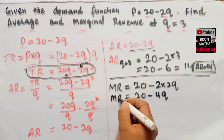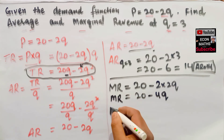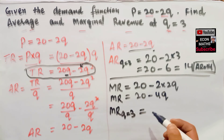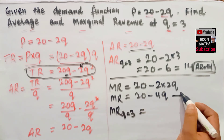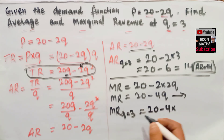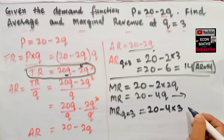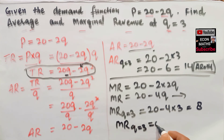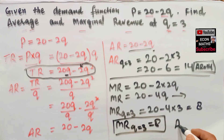Marginal revenue when Q is equal to 3: we put the value Q equals 3 into the equation, giving us 20 minus 4 into 3, which comes out to be 8. So our marginal revenue at Q equal to 3 is equal to 8, and our average revenue when Q is equal to 3 is equal to 14.